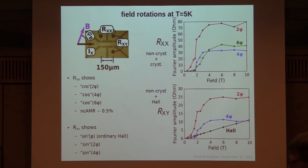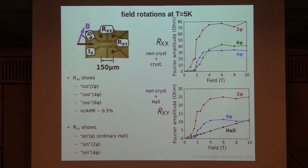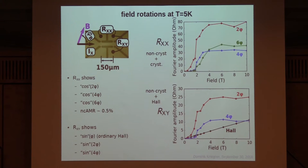Notably, the 6φ term is flat up to 2 Tesla, then starts to increase and saturates around 6 Tesla — corresponding to the range where we saw the moment evolve in the SQUID. The non-crystalline terms already show up at lower fields, consistent with the fact that even fields below the spin-flop can wobble the moments and produce non-crystalline contributions larger than crystalline ones.